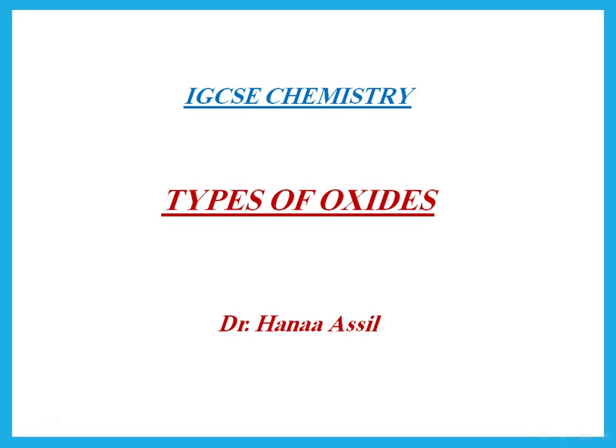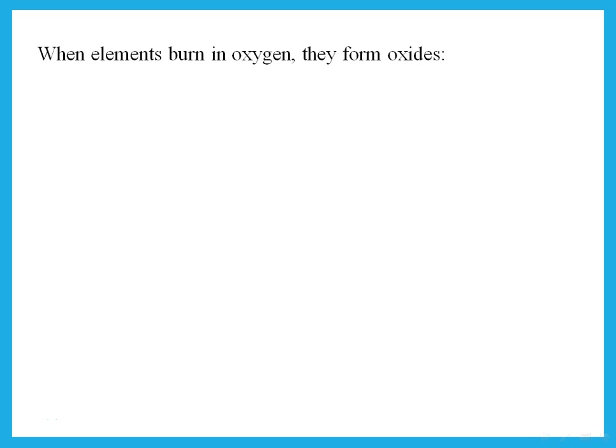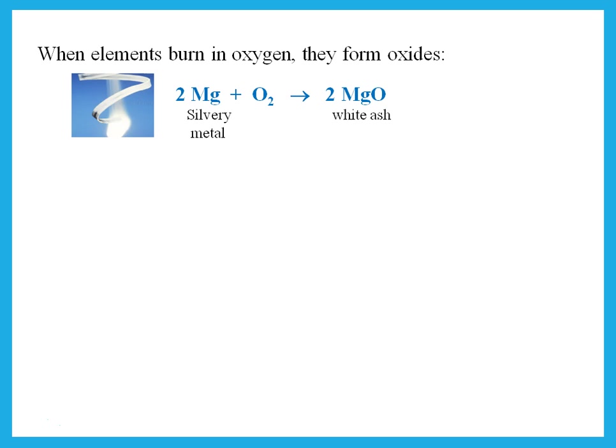Hello, this is Dr. Hannah Asil and we're talking about types of oxides. You know that when elements burn in oxygen, they form oxides. For example, if I burn magnesium in oxygen — magnesium is a silvery metal — when it burns in air, it burns with a bright flame and turns into magnesium oxide, which is a white ash.